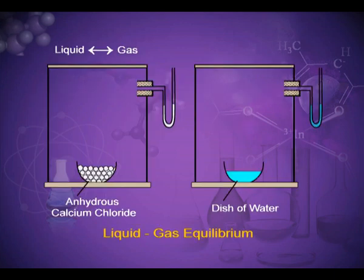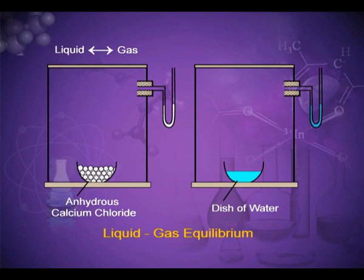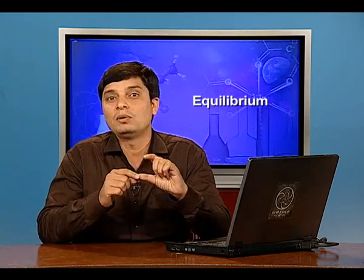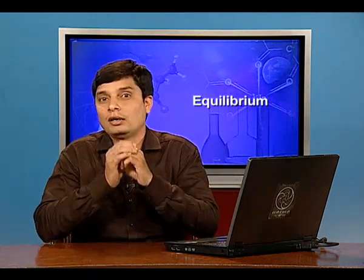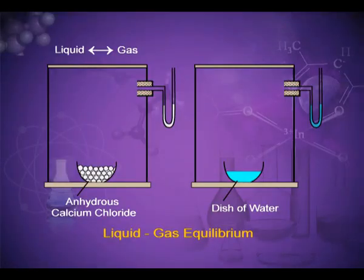This can be explained using a diagram. In the first box, the anhydrous CaCl₂ absorbs moisture present in the container, so the mercury levels in both sides of the manometer are equal. In the second diagram, after replacing the CaCl₂ with water, the liquid water changes into vapor, the vapor pressure increases, and the mercury level rises on the right side of the manometer. After some time, condensation of water molecules takes place, the mercury level equalizes, and this represents the dynamic equilibrium of this physical state.